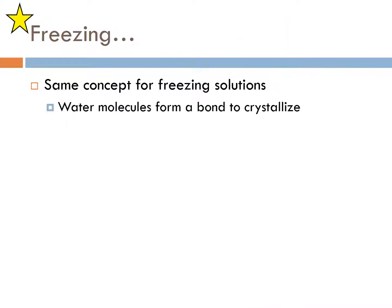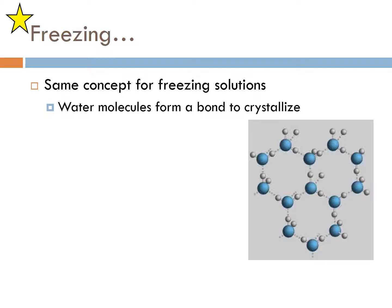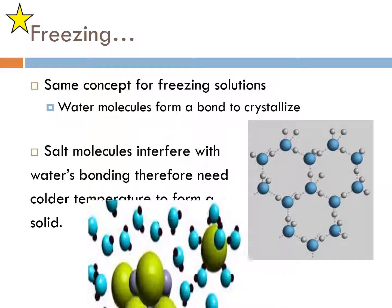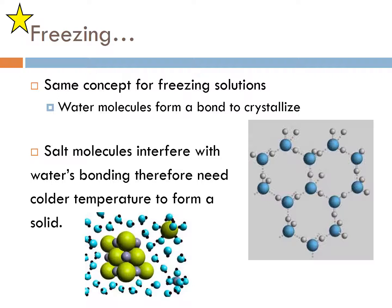Freezing is the same concept. Things get in the way, so you have to use more energy to get them to freeze. Water forms a crystal structure of ice as you can see here. Now when salt molecules interfere with water's bonding, they're going to need lower temperature to form that solid. As you can see here, salt is in the way for water to actually make a crystal structure, so you need colder temperature to make it a solid.